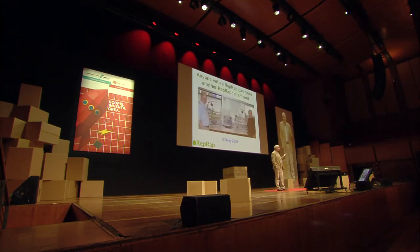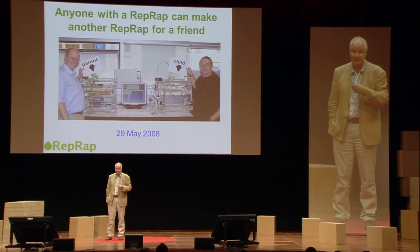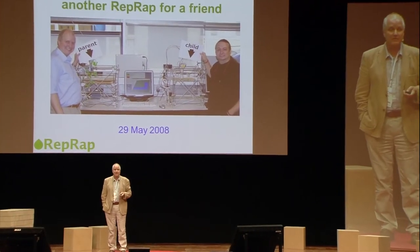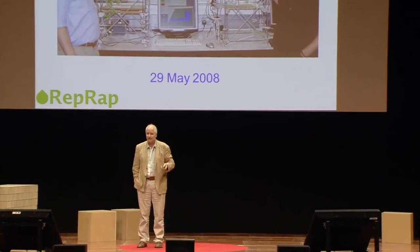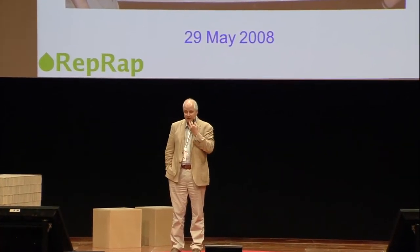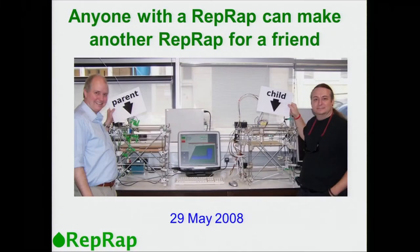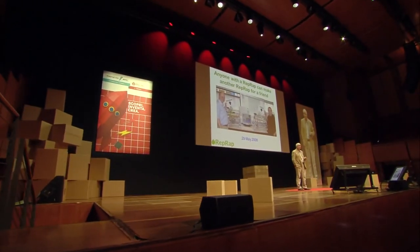But the most important thing that a RepRap machine can make, in one sense, is another RepRap machine. This picture was taken on the 29th of May, six years ago. The person on the right is Vic Oliver, another guy on the RepRap project from New Zealand. The machine on the left is the very first RepRap 3D printer we ever made, built using a commercial 3D printer costing 40-odd thousand dollars. The child machine on the right was the first complete copy we made of it.